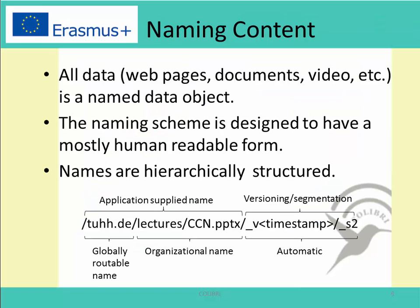The first main component of CCN is the naming content, or named data object. This is the main abstraction of the CCN. All data such as web pages, documents, videos, etc. is a named data object. This naming content is independent of the location and storage method, and therefore its identity is kept regardless of the location, storage, and the communication method.